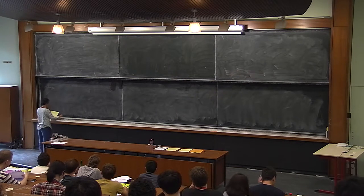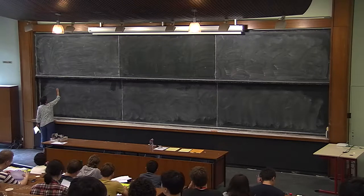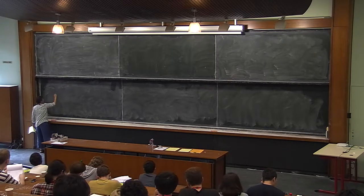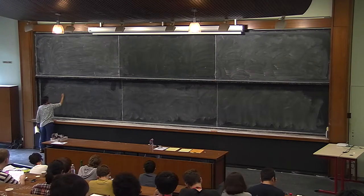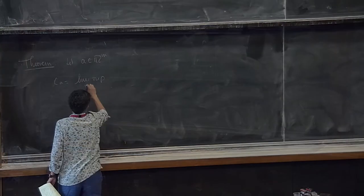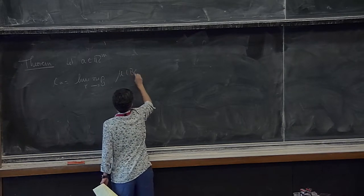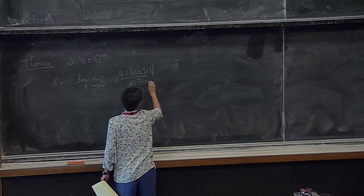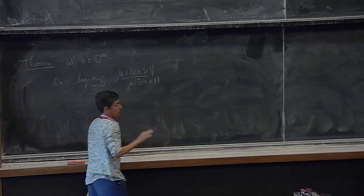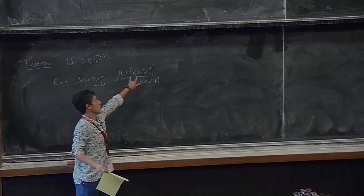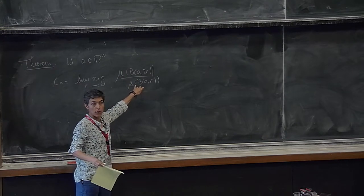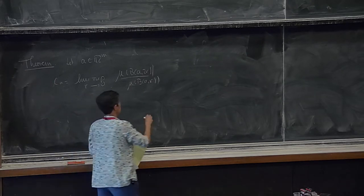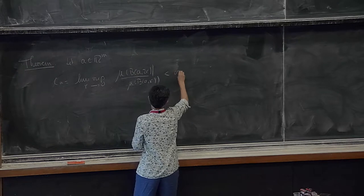So we have a random measure, and we assume let a be anywhere in R^m, and I look at these numbers C_sub_a, which is the limsup as r goes to zero of mu of B(a, 2r) over mu of B(a, r). This is the measure of a bigger ball over the measure of a smaller ball. This number is bigger than one—particularly bigger than zero—and what we are going to assume is that this number is finite.